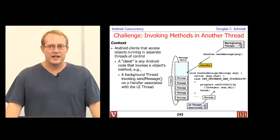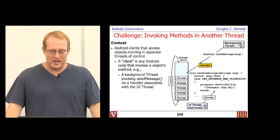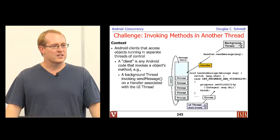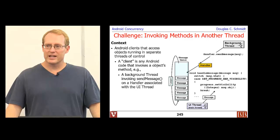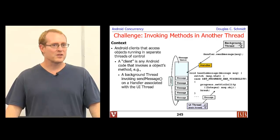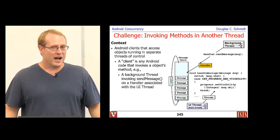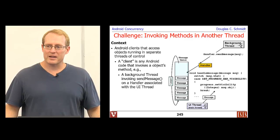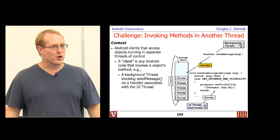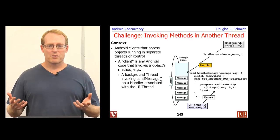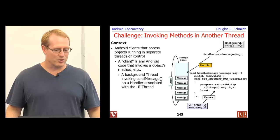The particular context we're going to focus on here is a situation where a client wants to invoke methods of an object that's running in another thread of control, or it wants those methods to run in another thread of control. This is a generic issue — we're going to talk about it primarily in the context of Android, but as we go through the pattern, you'll see that the topics are much more generalized than just Android.